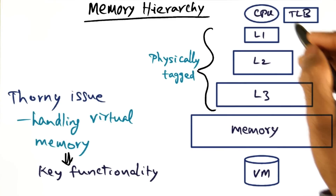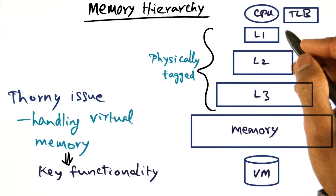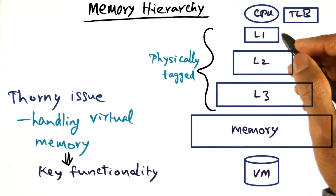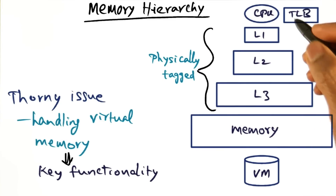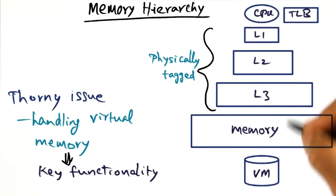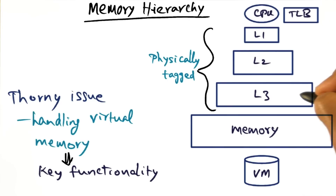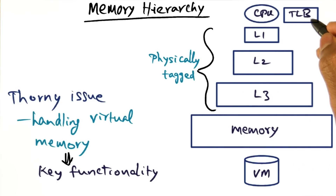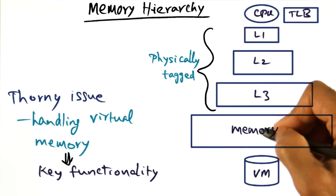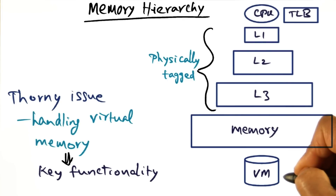I'm sure by now this picture is very familiar to you, showing you the memory hierarchy going all the way from the CPU to the virtual memory on the disk. You have several levels of caches, of course the TLB that holds address translations for you — virtual to physical — and you have the main memory, and then the virtual memory on the disk.